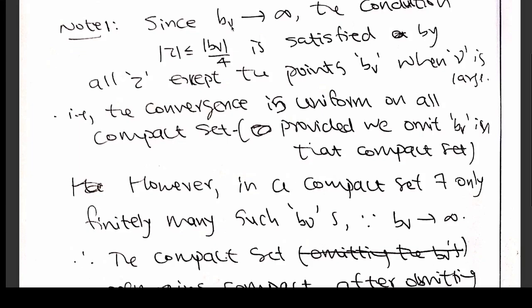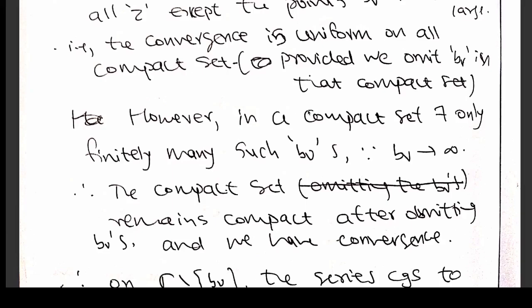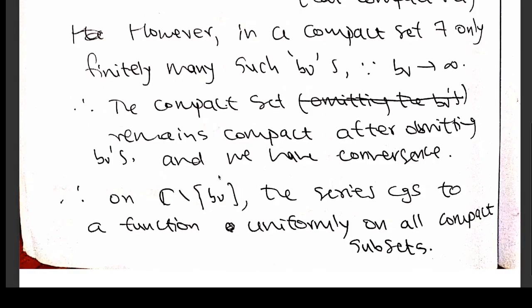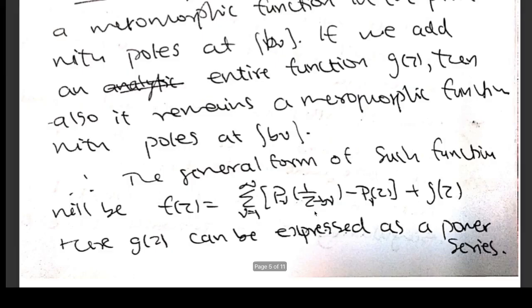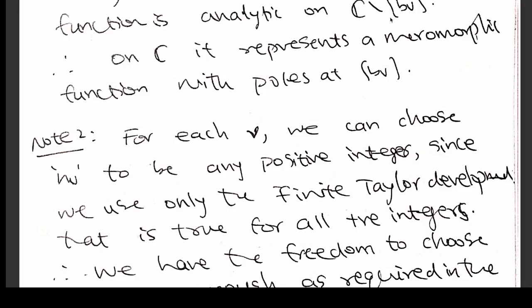Since b_ν tends to infinity, we note that |z| ≤ |b_ν|/4 is satisfied for all z except at the points b_ν when ν is large. So the convergence is uniform on all compact subsets. Any compact subset will contain only finitely many b_ν since they diverge to infinity. So the convergence will be uniform on all compact subsets. Except at these points, this is a sequence of analytic functions converging to something, so that limit will be analytic except at these points. On ℂ minus {b_ν}, the series converges to a function uniformly on all compact subsets. Hence by Weierstrass's theorem, you have analyticity of the limit function on ℂ minus {b_ν}. So the only singularities are the b_ν, which are poles. Hence, we obtain a meromorphic function.